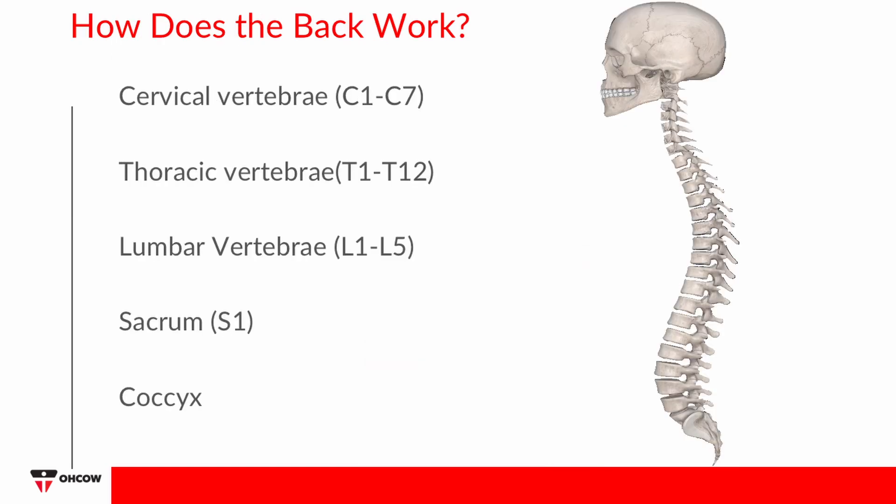How does the back work? The spine is the main component of the back, and there are many structures that allow the spine to function. The spine is comprised of bones called vertebrae that form the vertebral column, within which is the spinal cord. The main functions of the vertebral column are to provide support and movement to upper extremities, sites of attachment for the muscles and ribs, provide flexibility, protect the spinal cord, and allow passage for nerve roots.